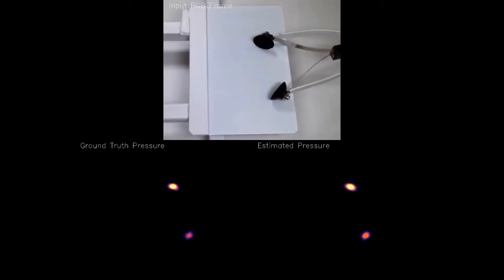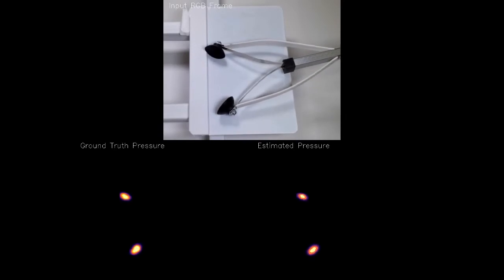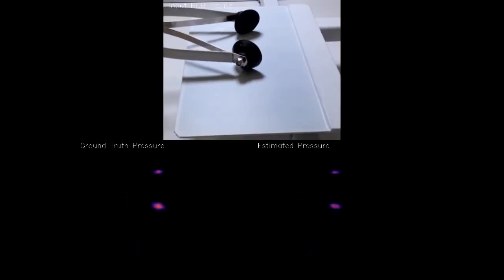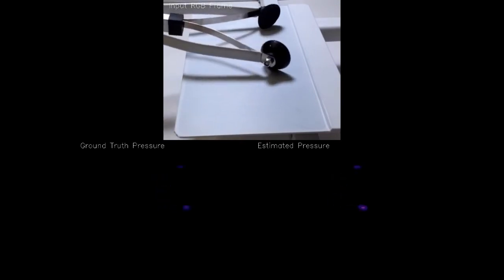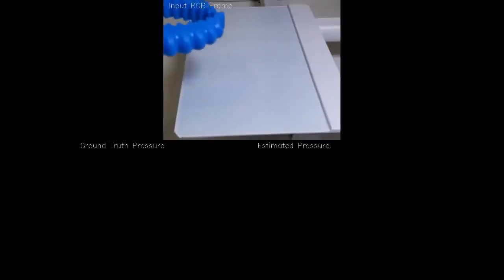We show results on a held-out test set. We find that VPACnet can reliably estimate the pressure exerted by the gripper. We also show results with the pneumatic gripper.